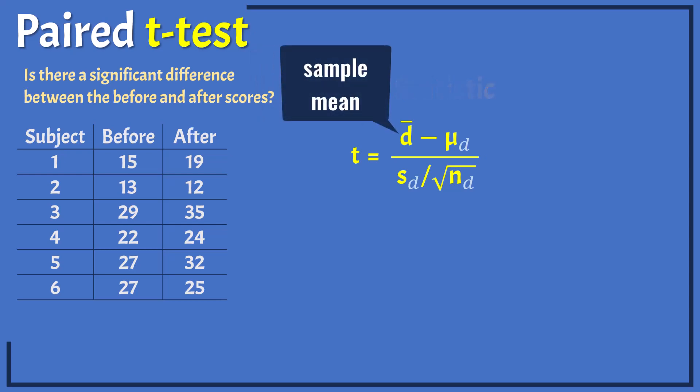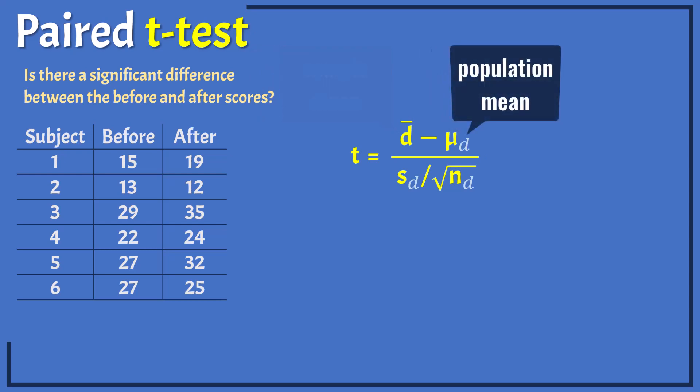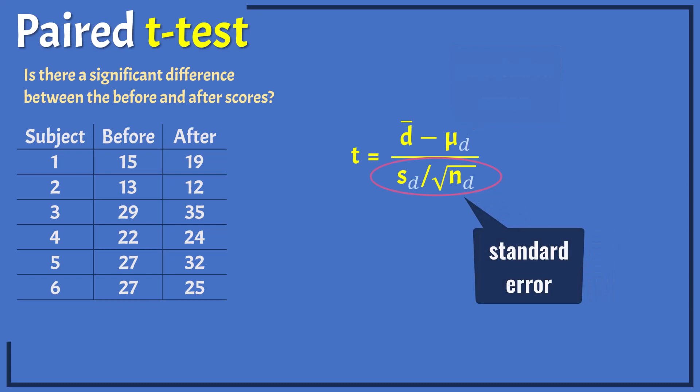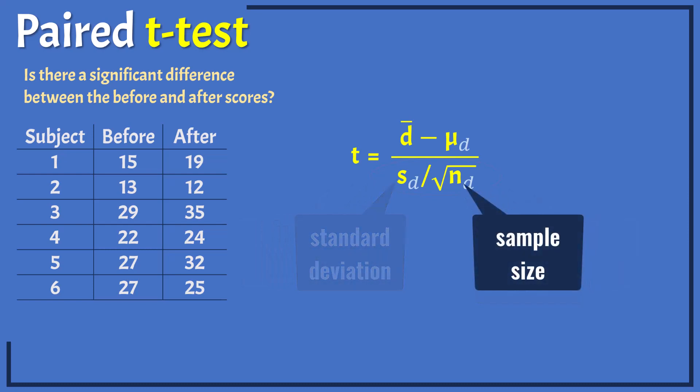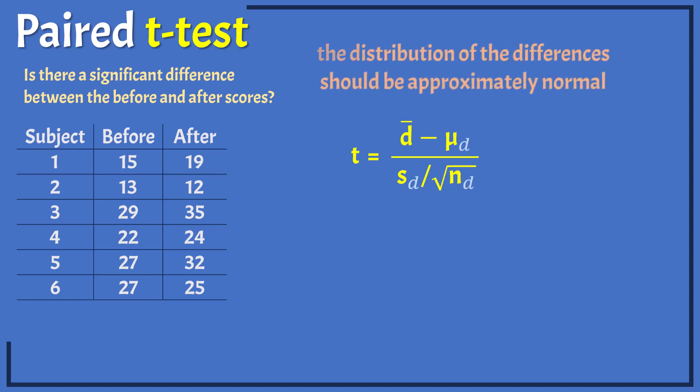D bar here is the sample mean of the before and after differences. Mu d is the population mean of the differences. And in the denominator, we have the standard error of the mean of the differences. That is the standard deviation of the differences divided by the square root of the number of pairs, or differences. The test requires that the distribution of the differences be approximately normal.